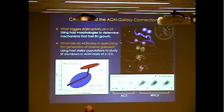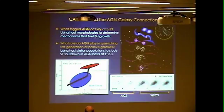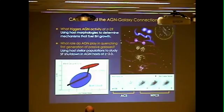We want to understand if AGN feedback plays any role in quenching star formation in massive blue galaxies and driving them onto the red sequence. We've made great progress on the first question, so I'll spend the first half of the talk on triggering mechanisms, and then highlight tantalizing results tying a high AGN fraction to galaxies on their way to quenching and moving onto the red sequence.